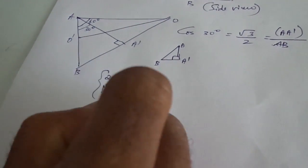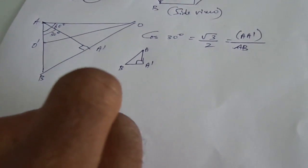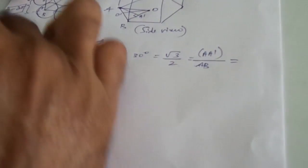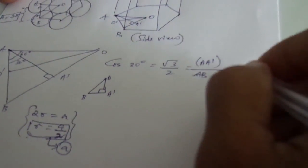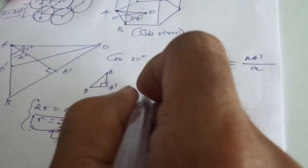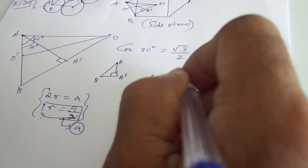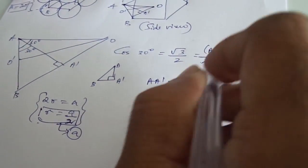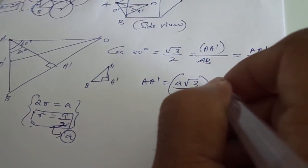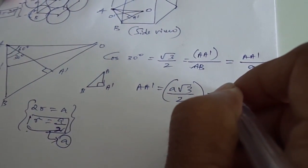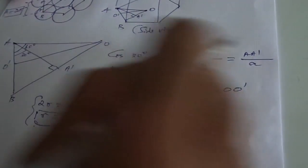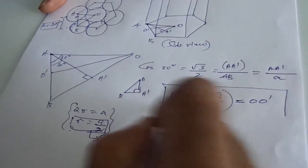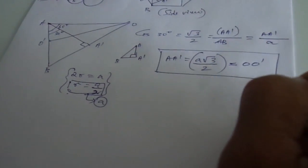This is equation (a): R = a/2. With this detail, AB distance is small a, so A-Adash equals a into root 3 by 2. This value is the same for the O-Odash normal as well. So A-Adash = O-Odash = a·√3/2. This is equation (b).